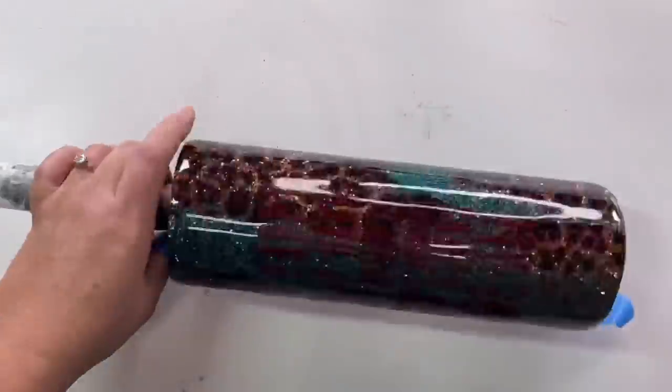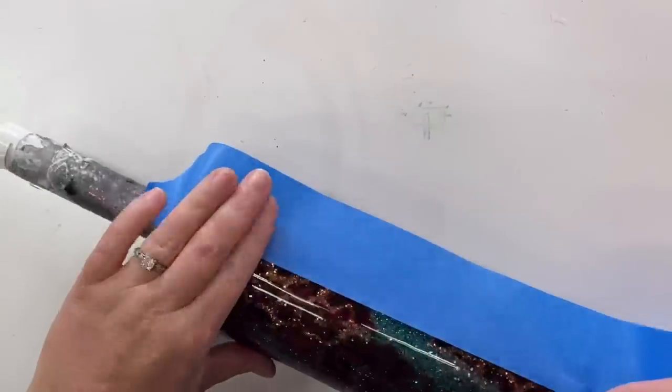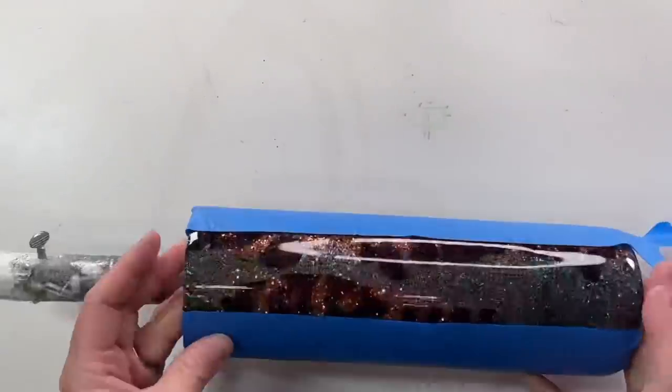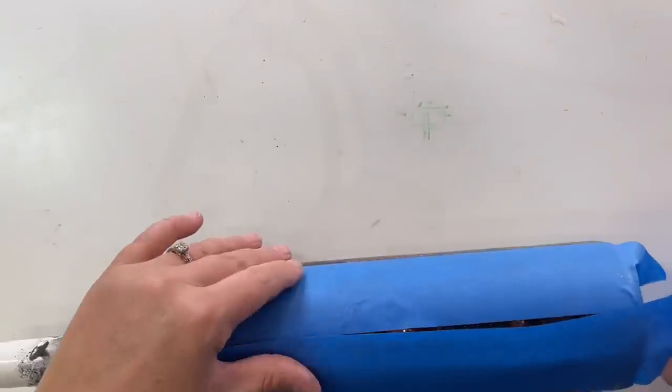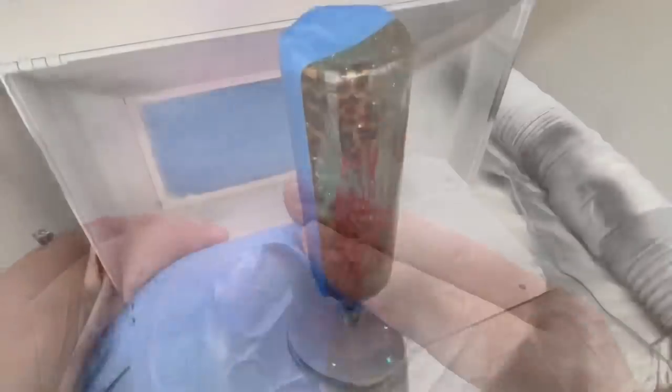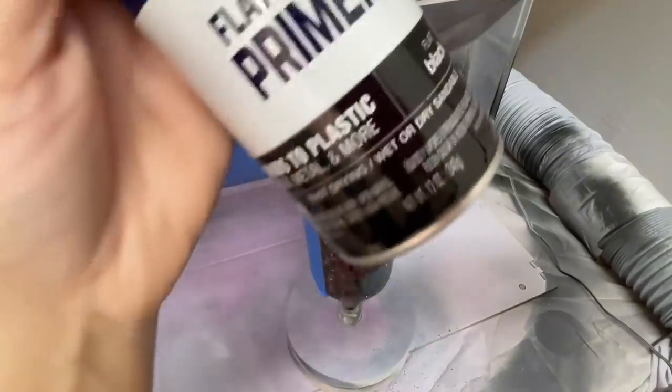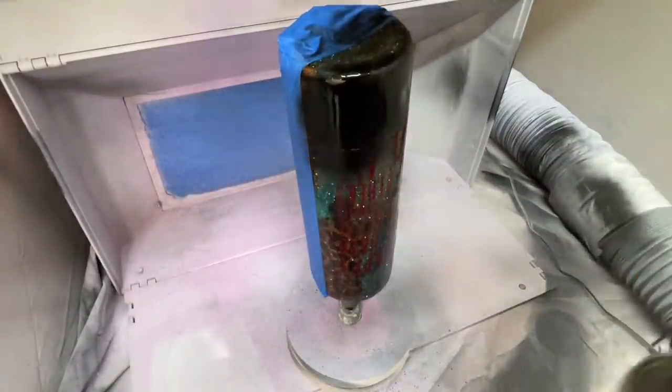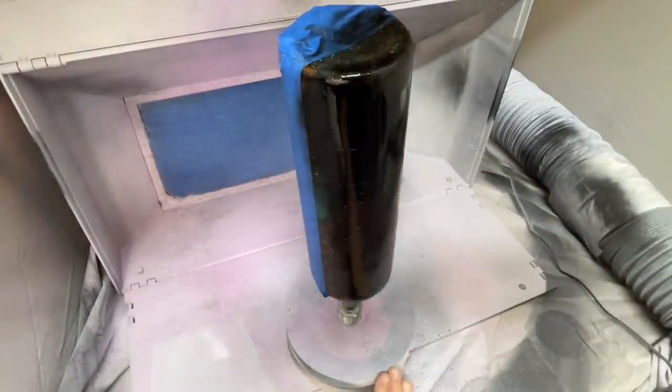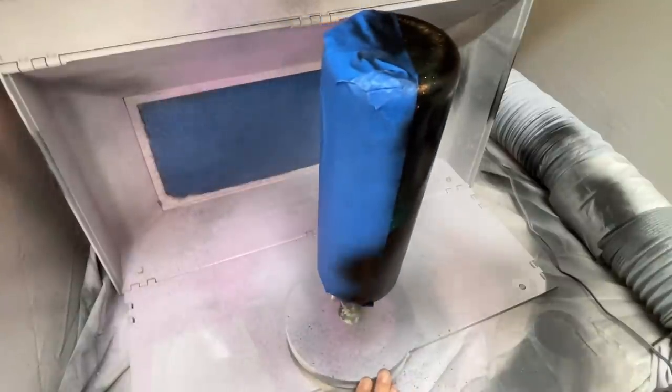Once I got my decal applied, I'm going to mask off half of my tumbler with some blue painter's tape, leaving the side that we applied the decal to exposed. And then once I have that masked off, I'm going to apply a coat of flat black spray paint. This coat should be a light coat. Don't go too heavy on this. And it's important that we use flat black for this because if you use a semi-gloss or a gloss paint, it's going to be harder to clean up during the distress process.